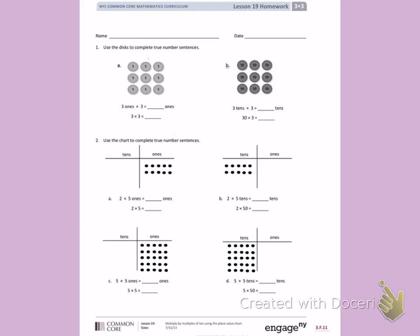Today's objective was to multiply by multiples of 10 using the place value chart. Number 1. Use the disks to complete true number sentences.